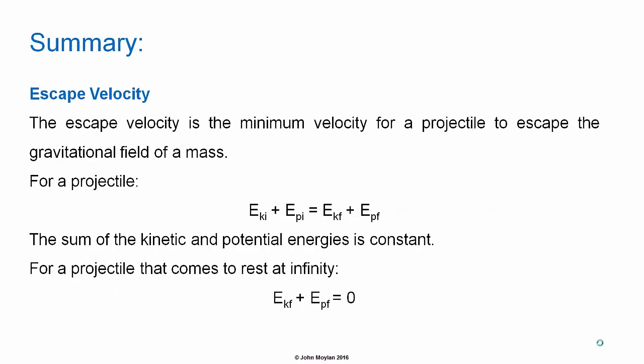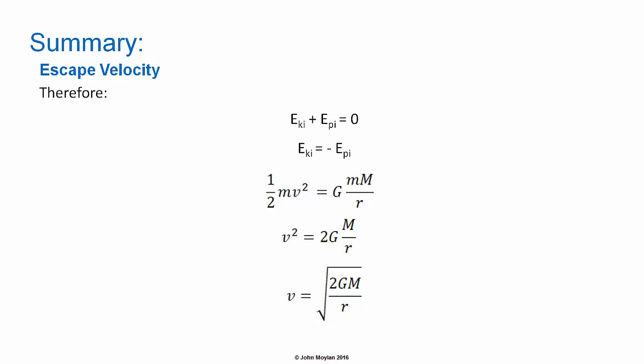Summary: The escape velocity is the minimum velocity for a projectile to escape the gravitational field of a mass. For a projectile, the sum of the initial kinetic and potential energy is equal to the sum of the final kinetic and potential energy, as the total mechanical energy of a projectile is constant. For a projectile that comes to rest at infinity, the sum of the final kinetic and potential energy must be equal to zero. Therefore, the sum of the initial kinetic and potential energies must also be equal to zero.